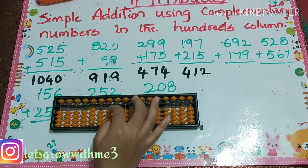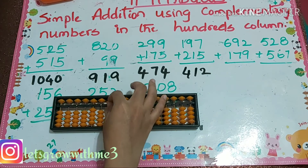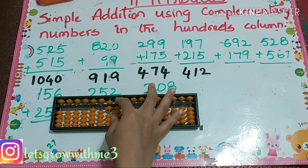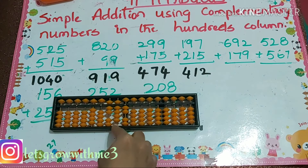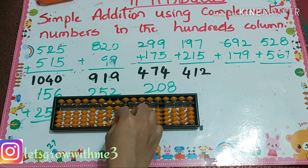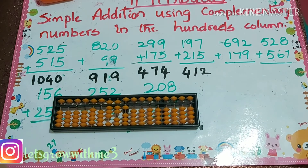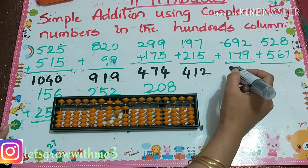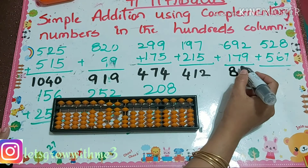Next problem: 692 plus 179. How to add 7 here? Plus 10 minus 3. And how to add 9 here? Plus 10 minus 1. So your answer is 871.